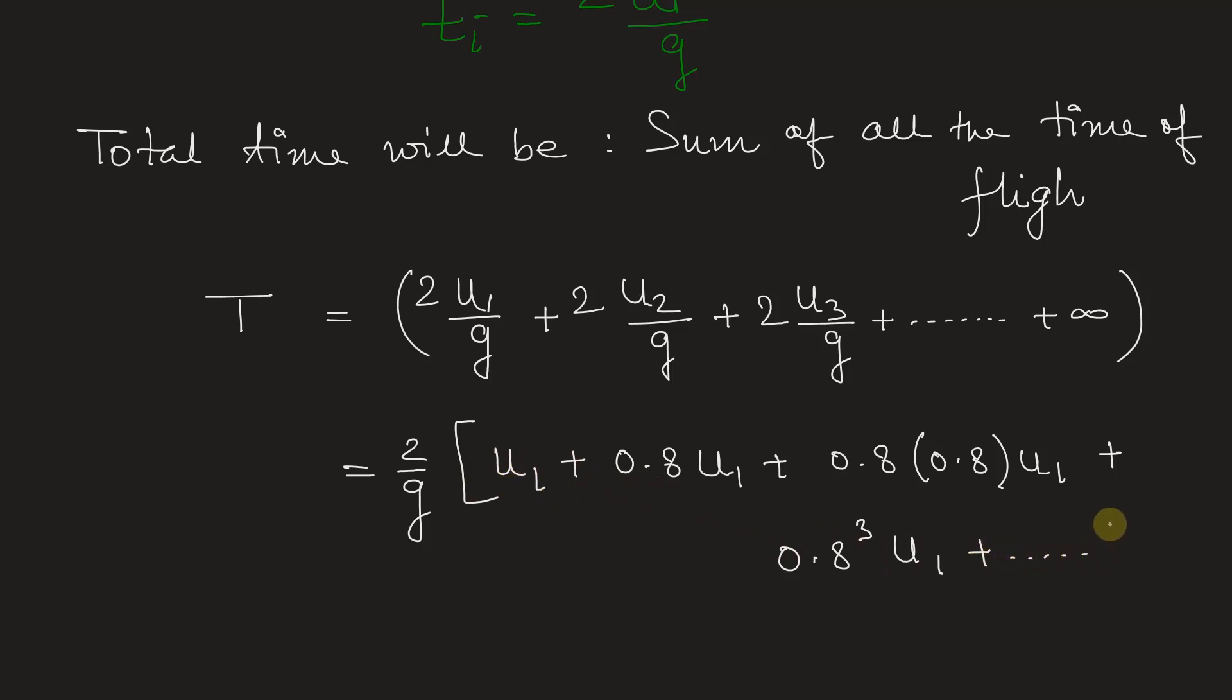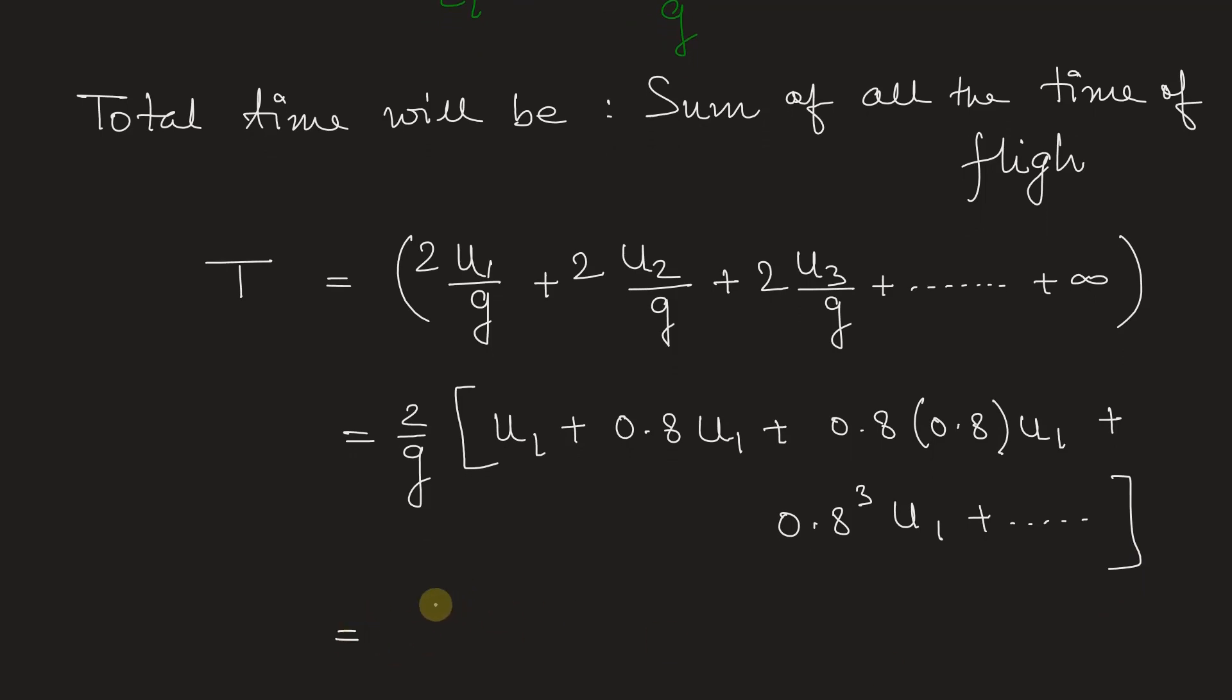And it will run up to infinity, infinite number of terms. So from here, now we can take u1 also outside. So 2u1, u1 value is already given in the problem that is 4 meters per second whole divided by g and the value of g we are taking is 10.